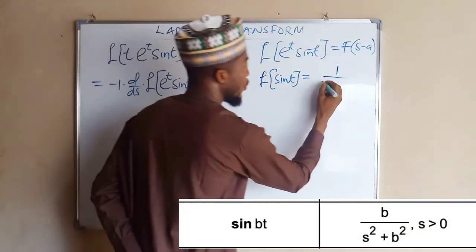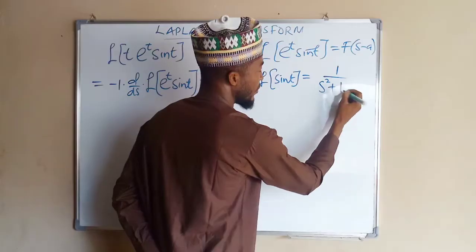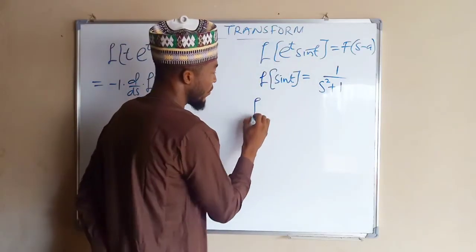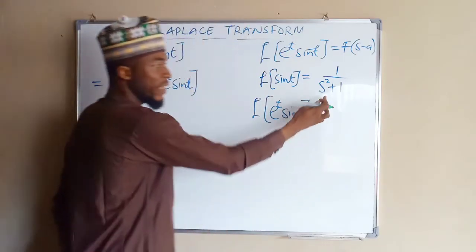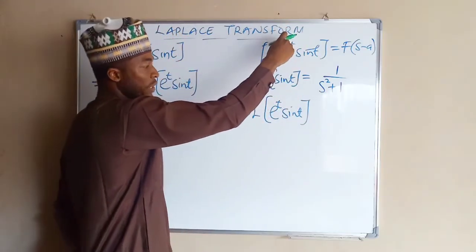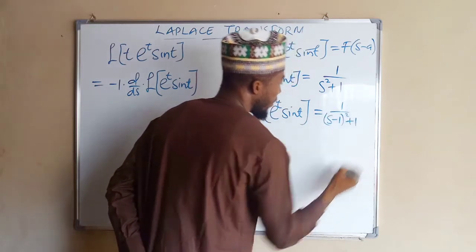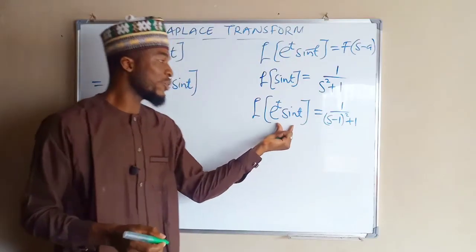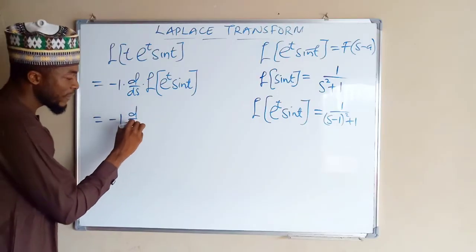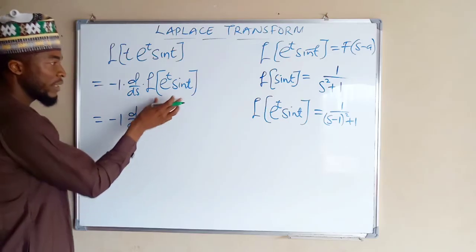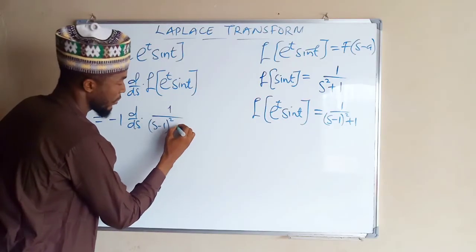We say: first of all find the Laplace transform of sine t, which equals 1 — the coefficient of t — over s squared plus 1 squared, where 1 is the coefficient of t. So to find the Laplace transform of e^t sine t, we replace s with s minus 1 (the coefficient of t), giving 1 over (s minus 1) squared plus 1. This is now the Laplace transform of that function. Bringing this back: this equals negative 1 times d/ds of 1 over (s minus 1) squared plus 1.